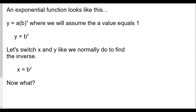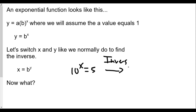So let's switch x and y like we normally do to find the inverse. In this case, if we know what the y value is and we're trying to find x, a way to solve for this is to change things around. For example, if I knew that 10 to the x was equal to 5, what I want to do is make the situation where the thing I'm looking for is my output, and so we would take the inverse.